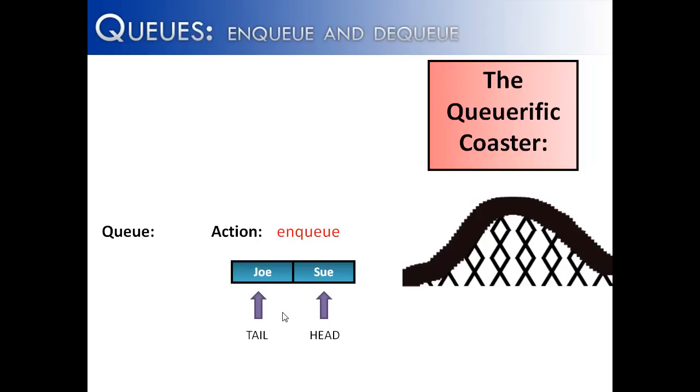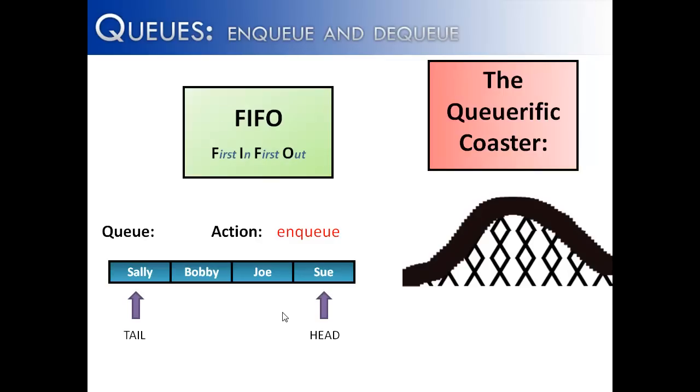Then we add Joe to our queue, add Bobby, and then finally Sally is added to the queue. Now, the reason why they have been put in this queue is to go on the queue-rific coaster. So they're going to ride the ride, and they're going to be riding in a FIFO manner, which means first in, first out.